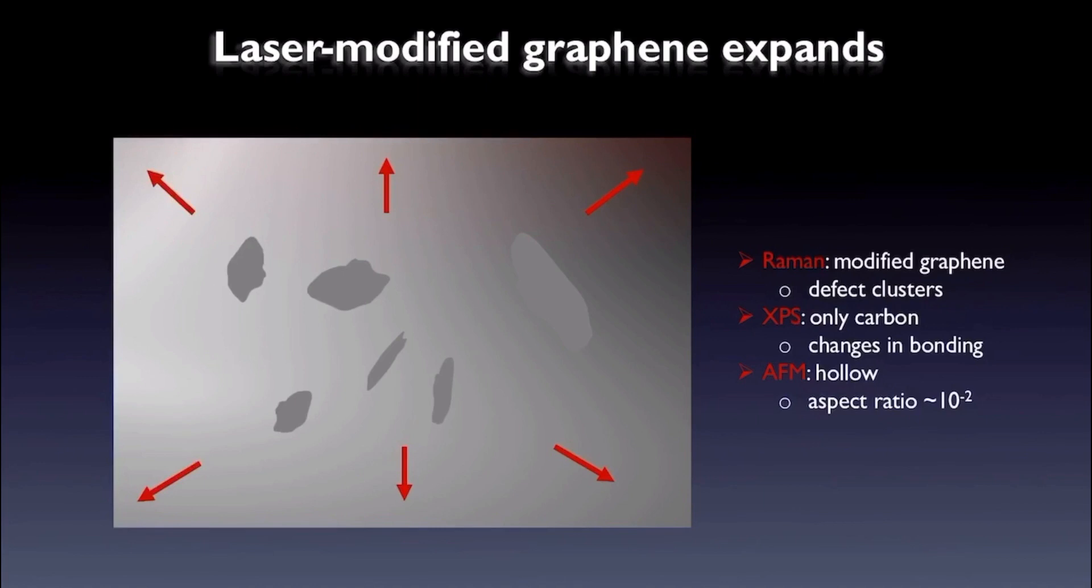From Raman measurements, we have indications that the graphene indeed is modified by defects and that the defects are clustered. From XPS measurements, we know that we only have carbon and changes in bonding, and from AFM measurements we know that we do have blisters and that they indeed are hollow and empty.